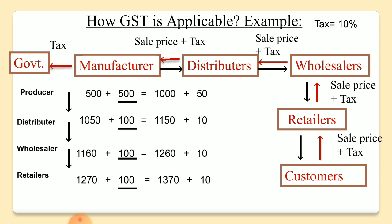Retailers transfer these goods to the ultimate consumer. The price for the customer is Rs. 1,380. The benefit here is that we did not put tax on tax — we only levied tax on the value addition at every stage of the distribution channel, so it is easier for customers to pay.